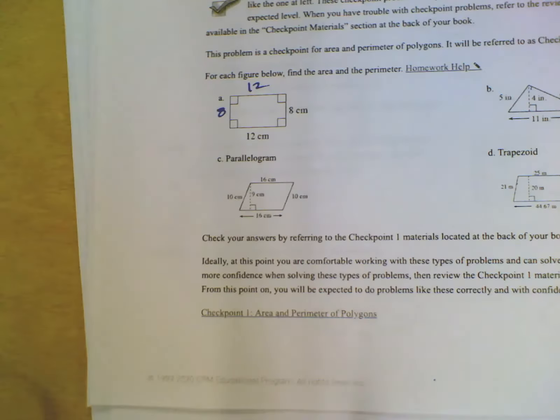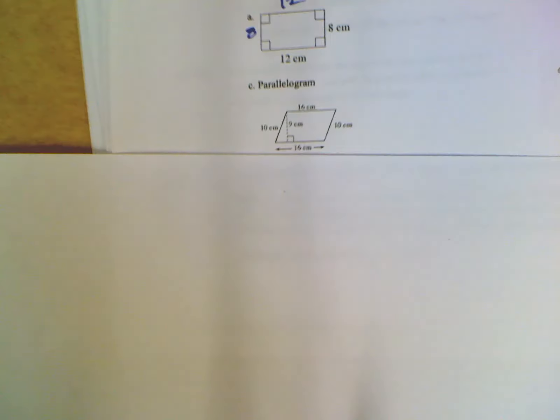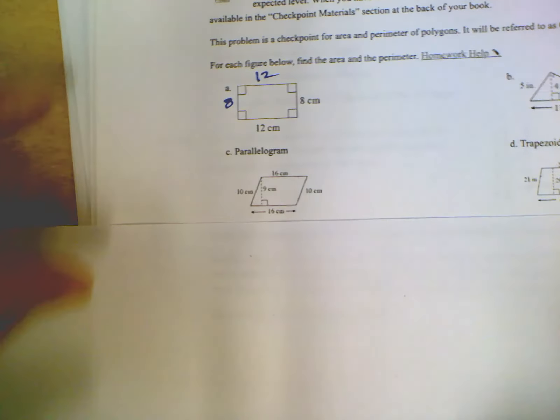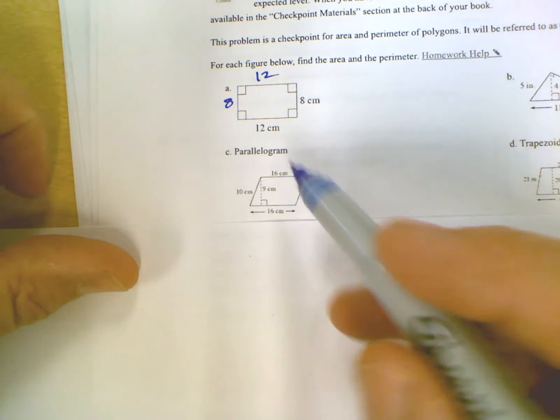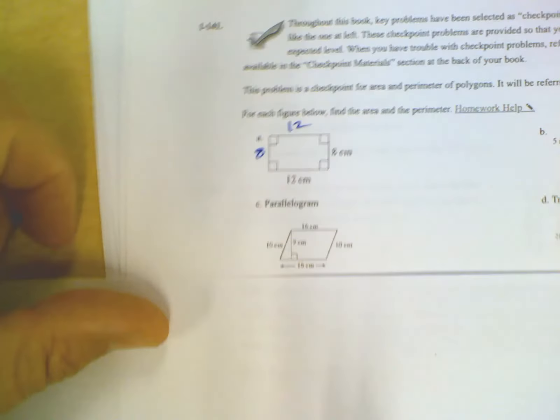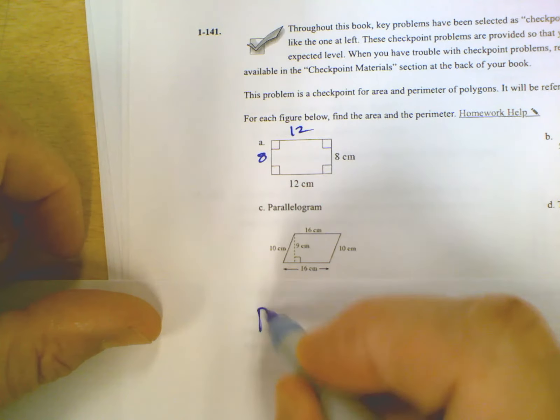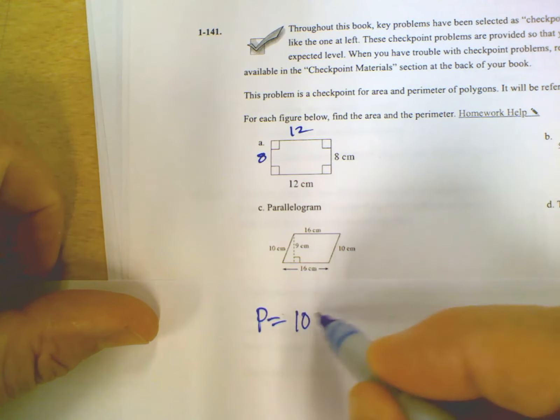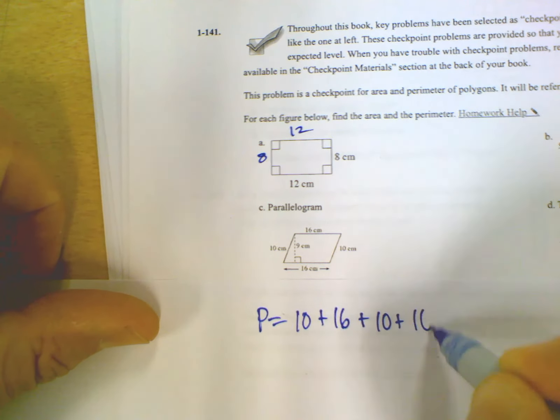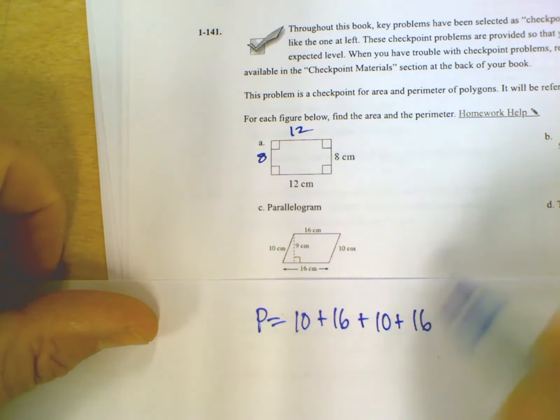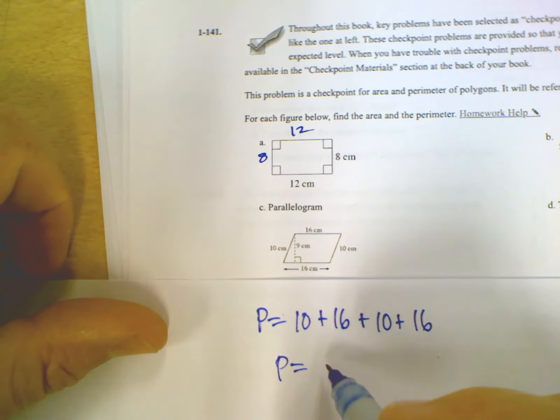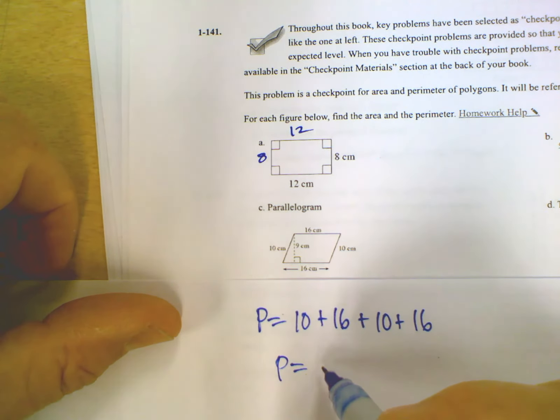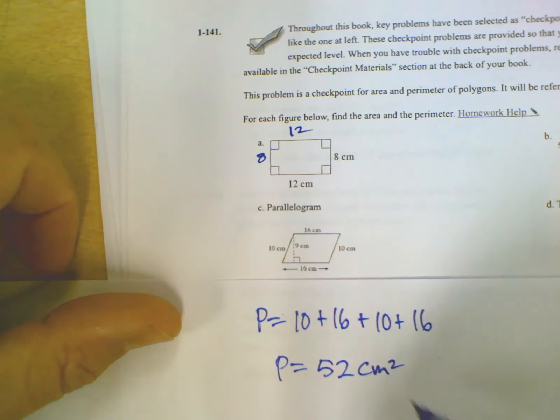All right. Let's move on to looking at the parallelogram. In this case, they told us this is a parallelogram. To find the perimeter of a parallelogram, same thing, add all the sides. So 10 plus 16 plus 10 plus 16. All the side lengths, we add them all up. So perimeter for this problem is going to be 52. So 52 centimeters squared.